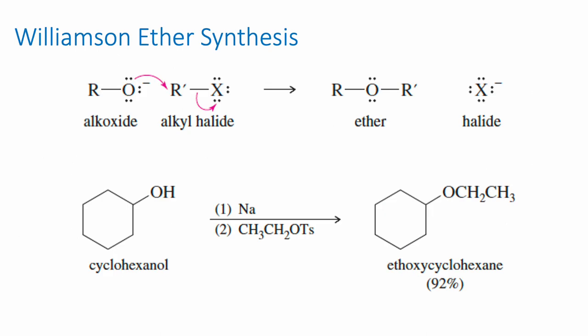Moving on to synthesis — we can deprotonate an alcohol using an appropriate base to give an alkoxide ion, which is a strong nucleophile that can participate in SN2 reactions. If we use an alkoxide and a primary alkyl halide, we can create an ether. This is called the Williamson ether synthesis. The alkyl halide must be primary — if it's secondary we compete with elimination, and if it's tertiary it will definitely be an E2 mechanism with no substitution product.